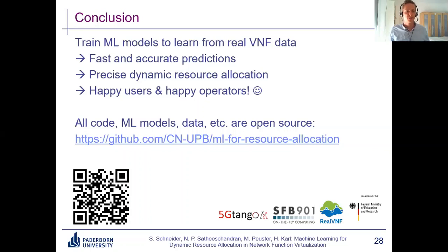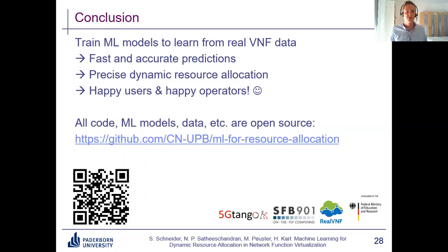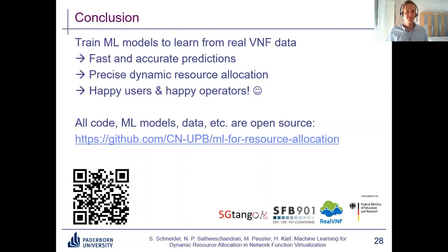In conclusion: we saw that we can train machine learning models from real-world VNF benchmarking data, and that fast and accurate predictions by these models enable precise and dynamic resource allocation. This ensures happy users — their demands are satisfied — and happy operators — resources are not wasted. All the code, machine learning models, and data are open source, available at the link or QR code shown. Thank you for your attention.